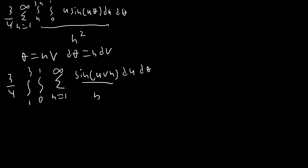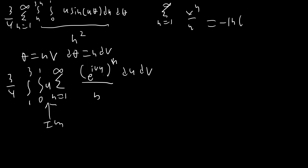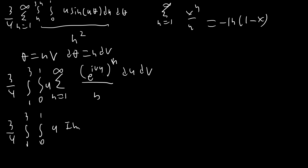We then move the integrals outside and put the sum on the inside. To evaluate the sum, we take the imaginary part of e^(iuvn) and pull the imaginary operator outside the sum, rewriting the base as e^(iuv) raised to the n. Using the identity that the sum from n equals 1 to infinity of x^n / n equals −ln(1 − x), we get three-fourths times the integral from 1 to 3 and 0 to 1 of u times the imaginary part of −ln(1 − e^(iuv)) du dv.